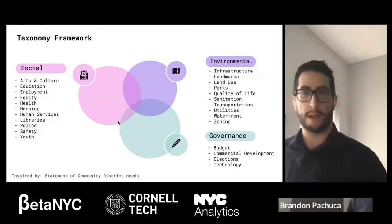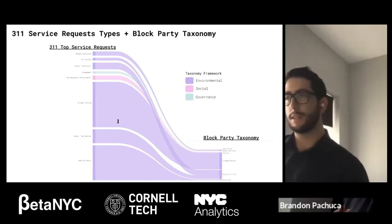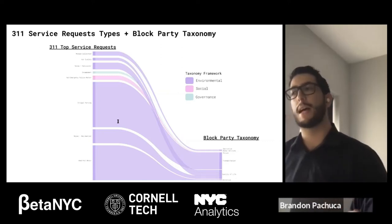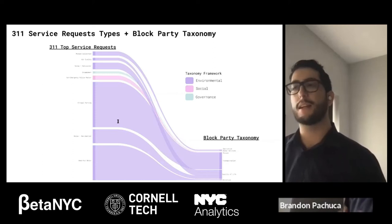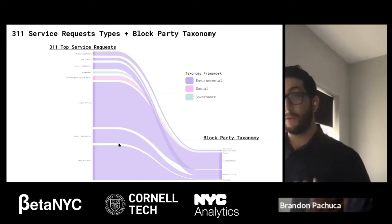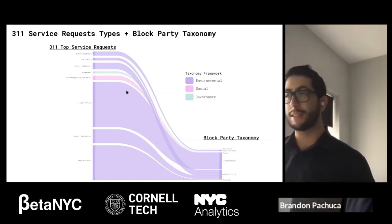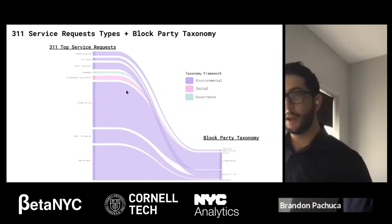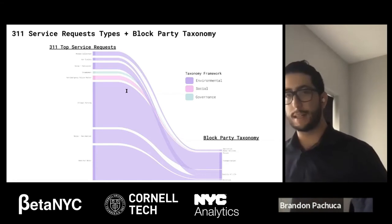This is the BlockParty taxonomy, which we applied to classify 311 service complaint types to enable us to compare if community board meetings were addressing complaints reported by 311. This diagram shows how we map the 311 service requests to our BlockParty taxonomy. For example, the complaint of missed collection is classified under sanitation. Each bar is sized proportional to its respective category — illegal parking has more proportional complaints than noise residential per community board, whereas transportation is a more frequent topic than quality of life in the transcripts.